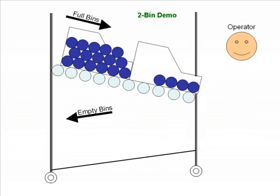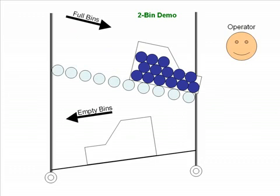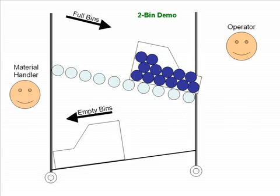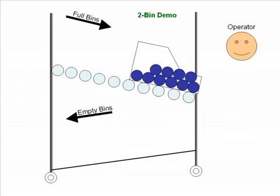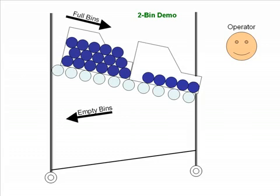As you can see, the operator is consuming parts as they disappear from the bin, and now they have an empty bin. The bin goes down to the bottom rack and naturally through gravity the top bin floats forward — slides forward. Here's our material handler grabbing the empty bin along with perhaps dozens of others, going back and replenishing them, refilling the bins, putting them back in the top, and the cycle continues.